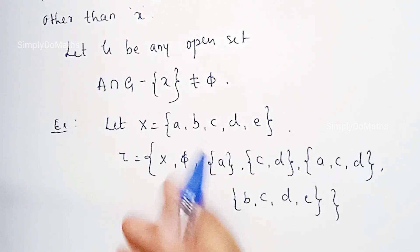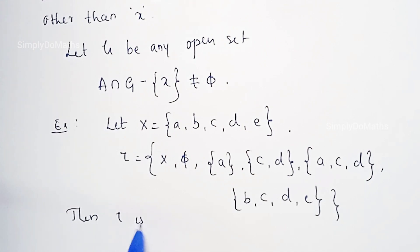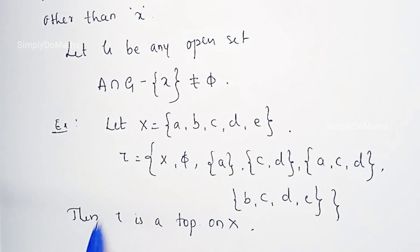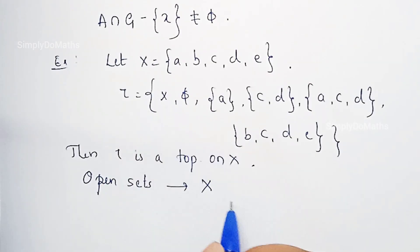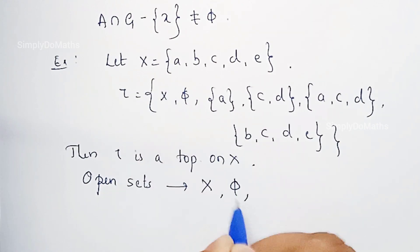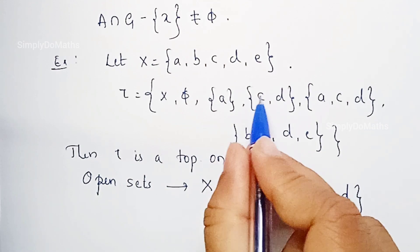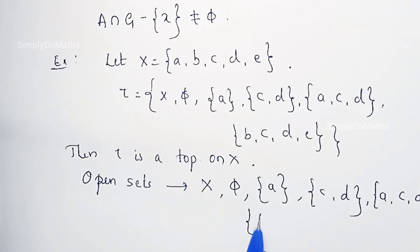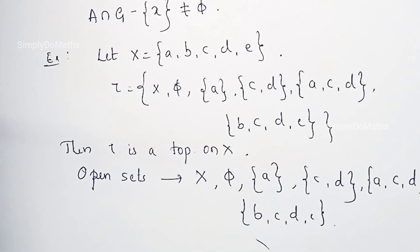Since tau satisfies all conditions of a topological space, tau is a topology on X. Let us list out all the open sets of tau: X, empty set, singleton set {A}, the set {C, D}, the set {A, C, D}, and the set {B, C, D, E}. These are all the open sets.